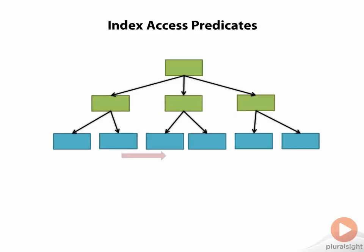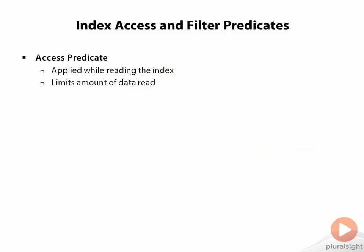In situations where multiple rows could be returned, like a non-unique index or a WHERE clause for a range of values, the access predicate also determines the start and stop points of what blocks Oracle has to read in the index.